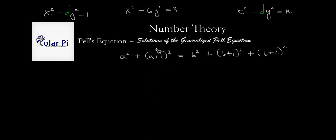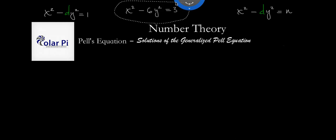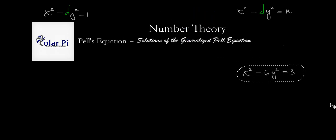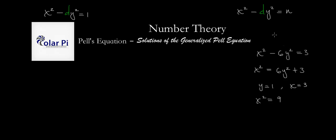In this video we're just going to talk about how to solve generalized Pell's equations. Say we're trying to solve x squared minus 6y squared equals 3. As we did in the first video, one thing we can do is write x squared equals 6y squared plus 3, and since we're seeking integer solutions, start with y equals 1 and keep trying. Here y equals 1 works: x squared equals 6 plus 3, which is 9, so x equals 3. One solution to x squared minus 6y squared equals 3 is (3, 1).